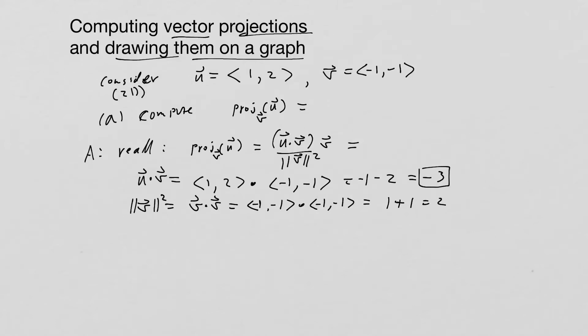So the projection then, once we have all these pieces, put them together, we have -3/2 times v. So that's our answer to this problem.